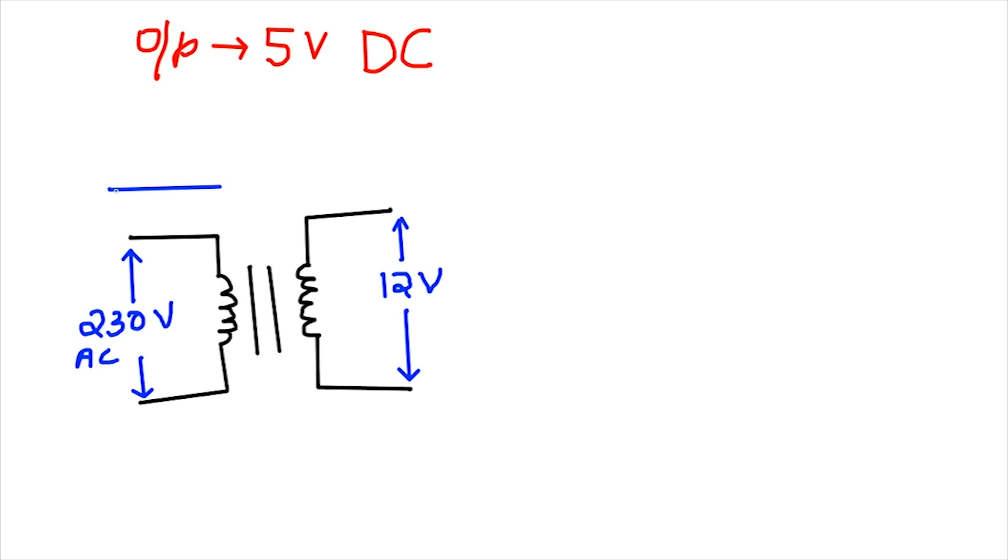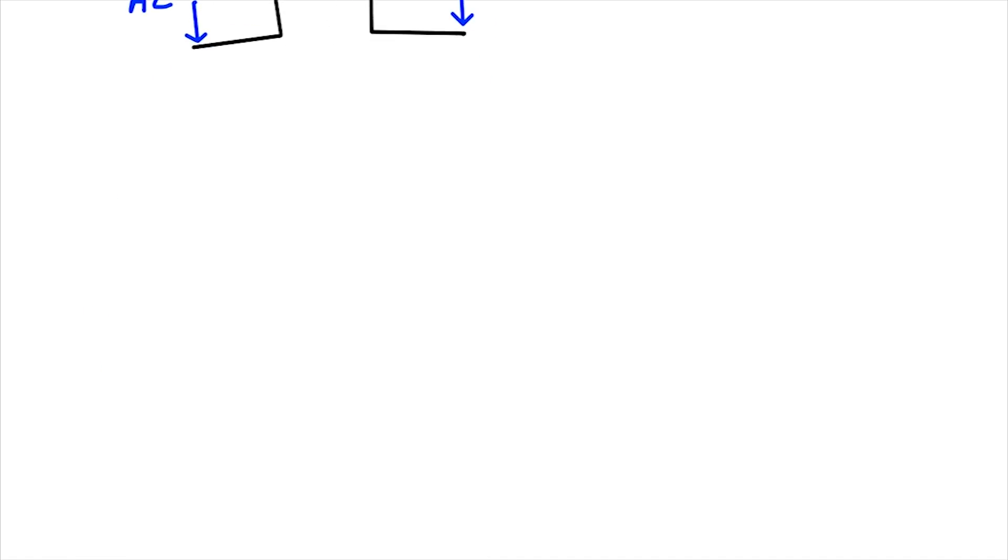So a step down transformer with 12V rating is what we will be using right now. If you have any previous experience in electronics, you may know a transformer's input and output are both AC voltages. So next step is to convert this 12V AC signal to DC. To do this we need some diodes. Let's use a simple IN4007 diode. A diode basically conducts in forward bias condition and acts as an open source during reverse bias. Let me demonstrate this in a more simple way.